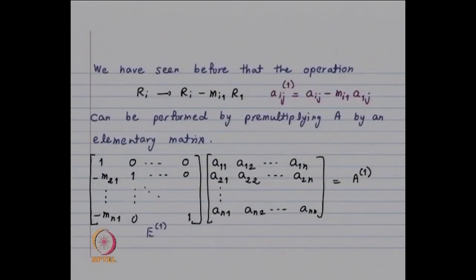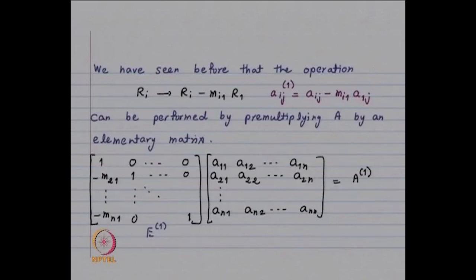We have seen before that when we wanted to do r_i minus m_{i1} times r_1 — subtract a multiple of the first row from the i-th row — this operation can be performed by pre-multiplying our matrix A by a matrix we called E_1. The matrix E_1 has ones along the diagonal, and in the first column from the second entry onwards, they are −m_{21}, −m_{31}, etc. When you consider E_1 times A, you get the modified matrix A^{(1)}, which was the first step of the Gauss elimination method.